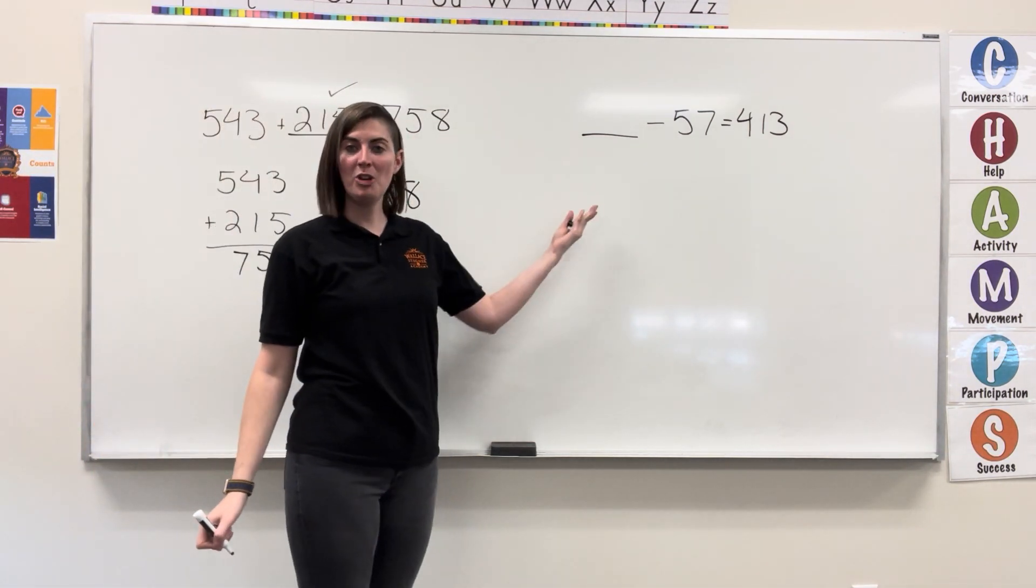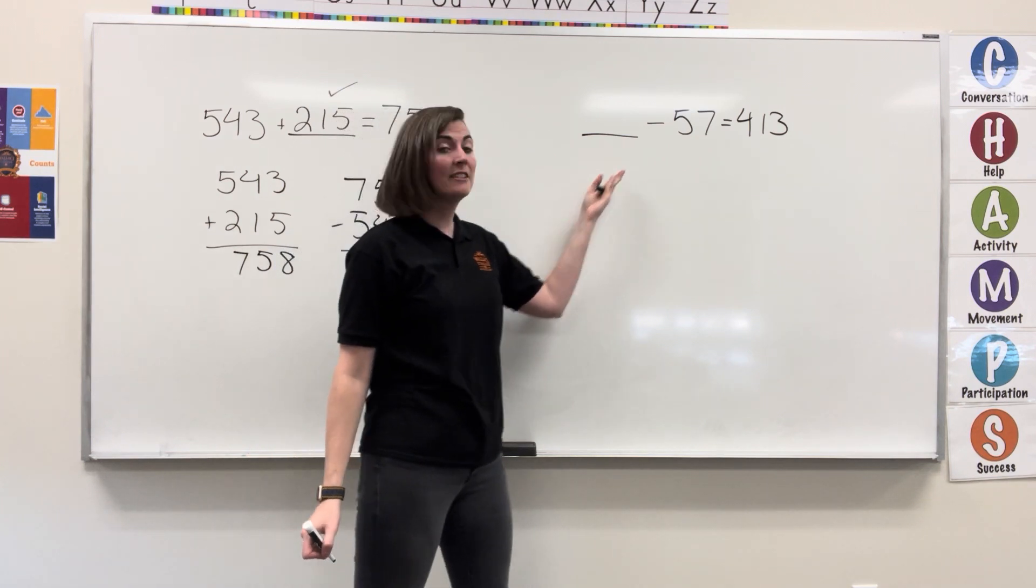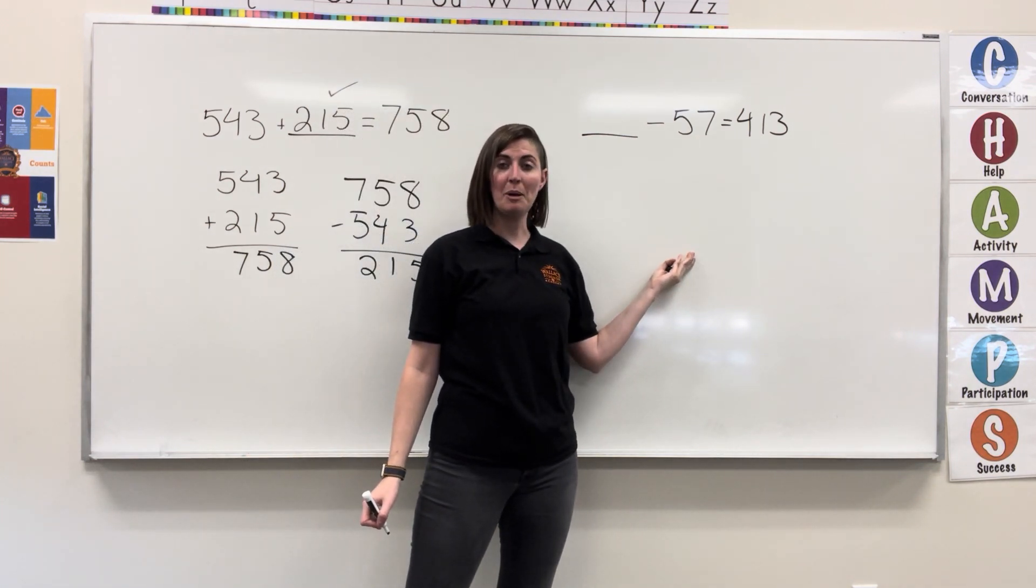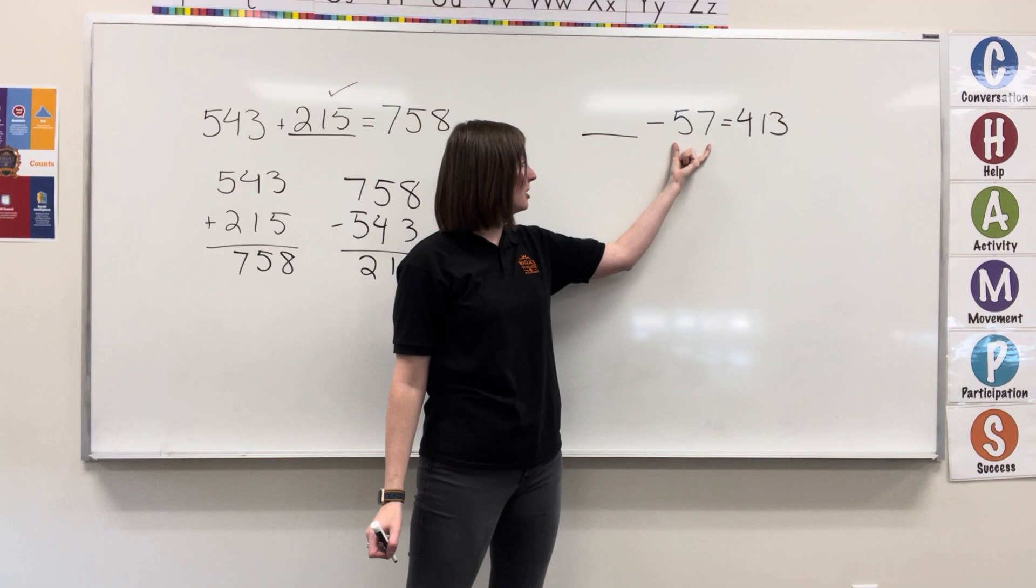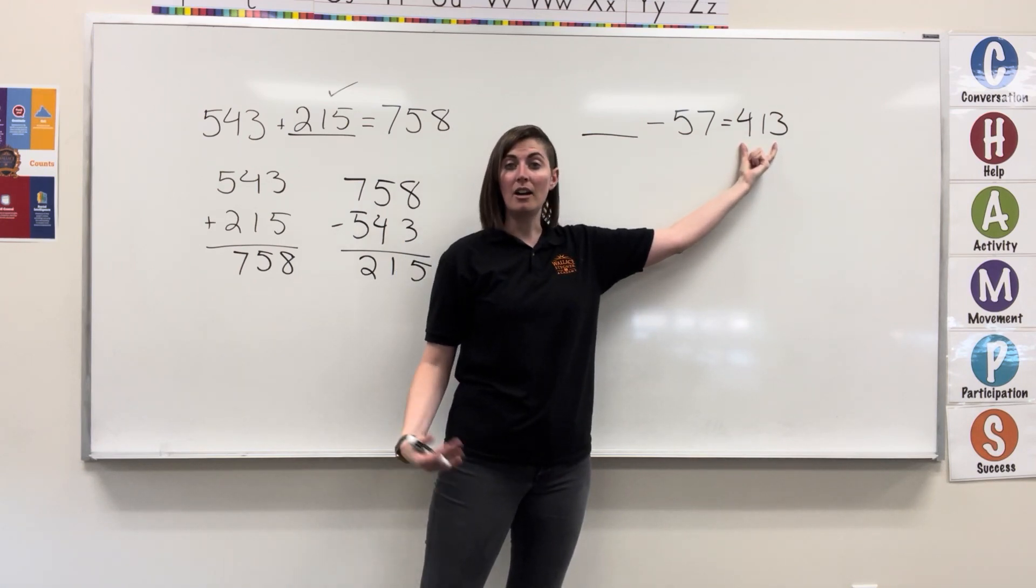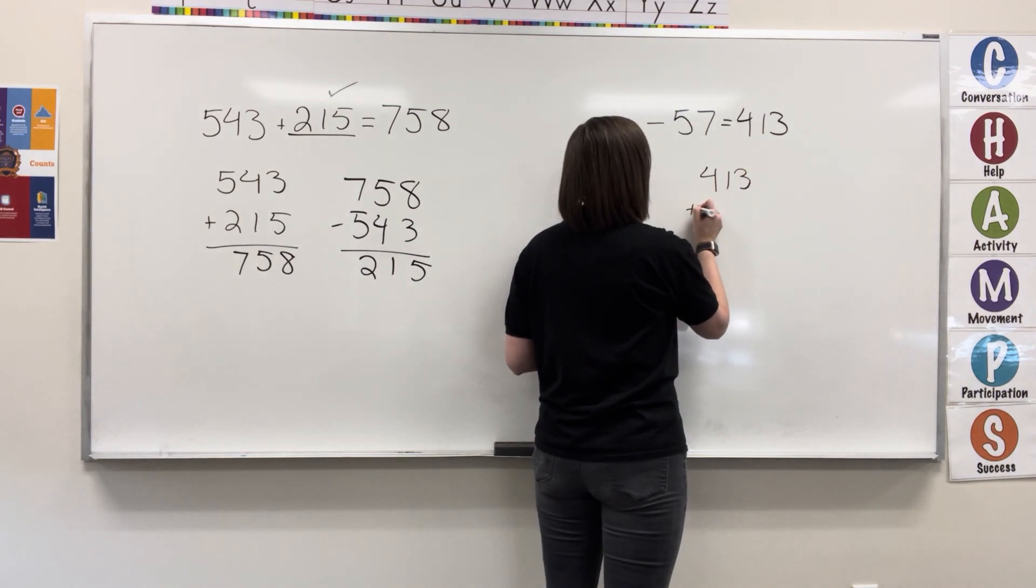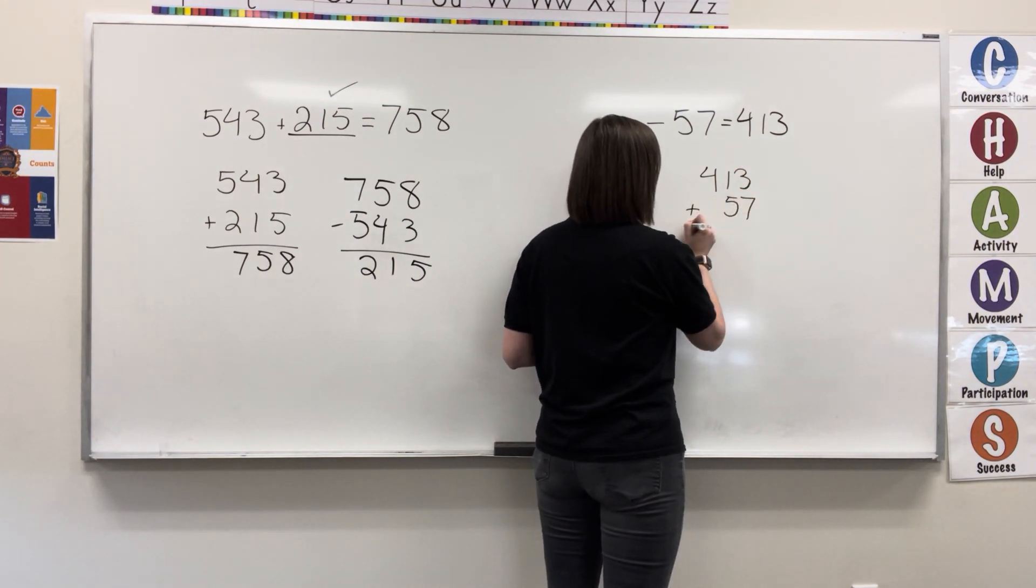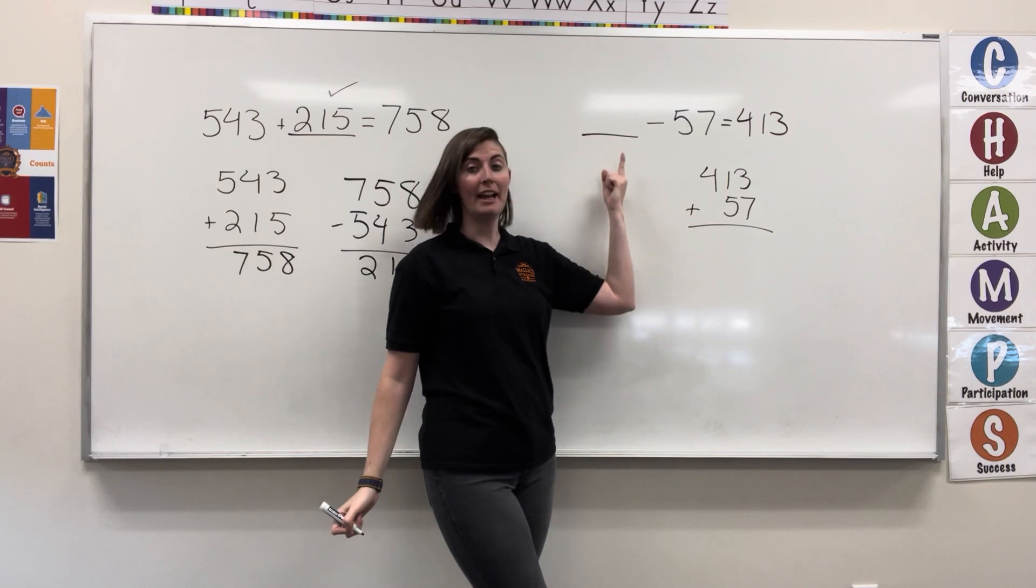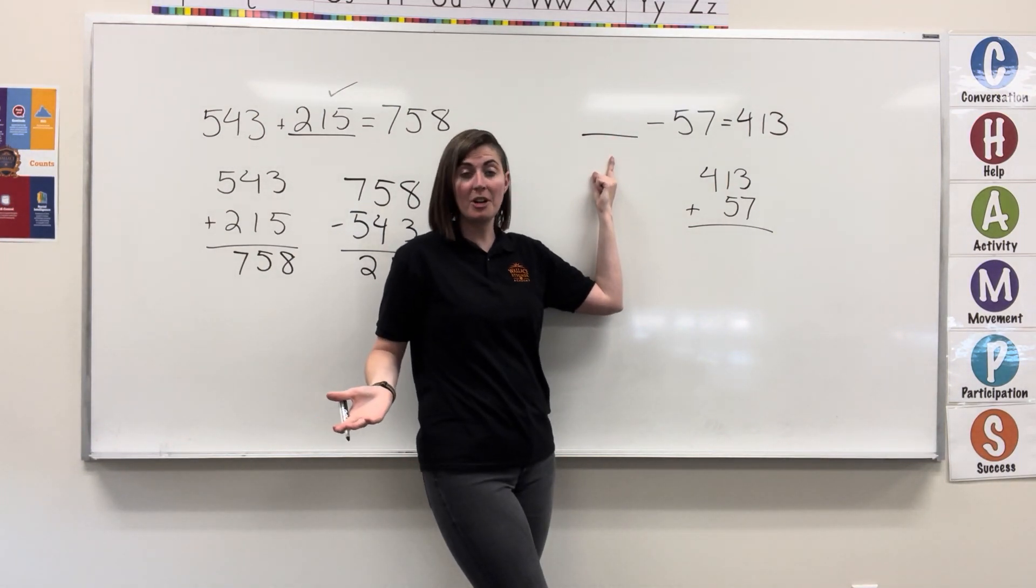Looking at a subtraction example, the inverse of subtraction is addition, so I'm going to take this number and add it to our difference. So we have 413 plus 57. That's going to get us what we happen to start with.